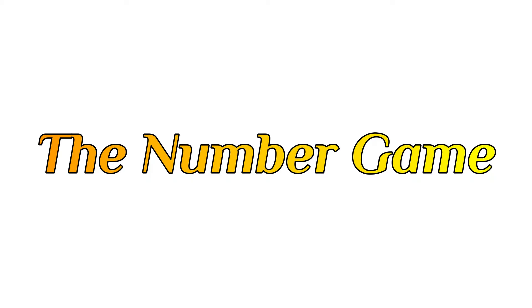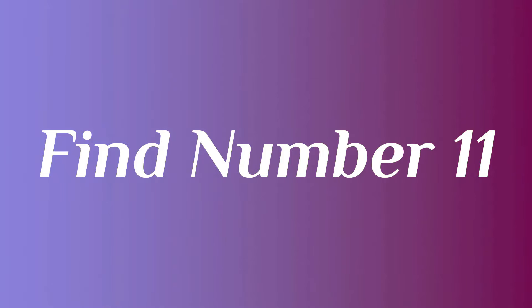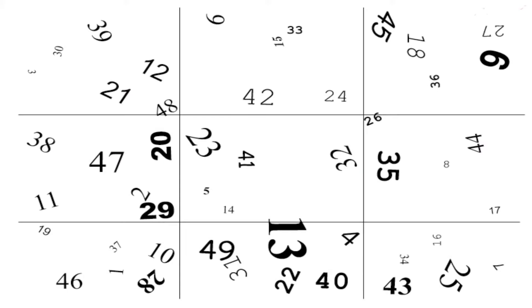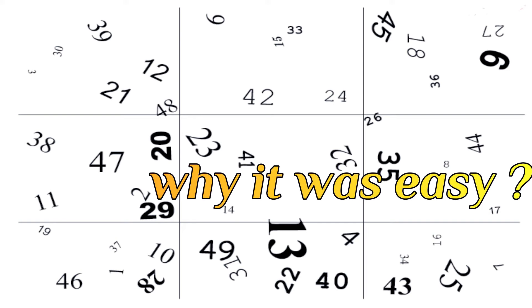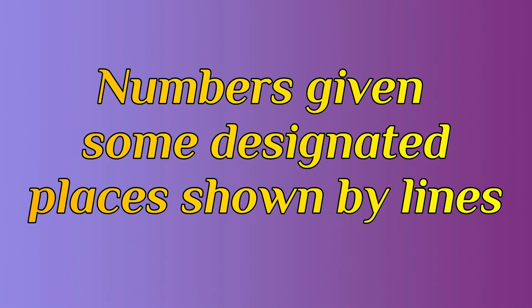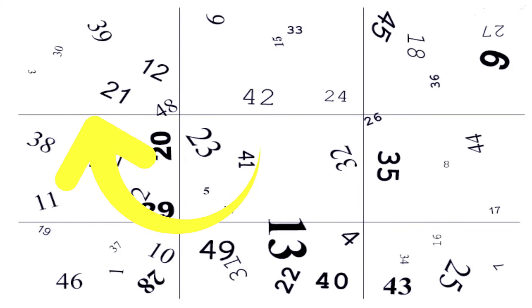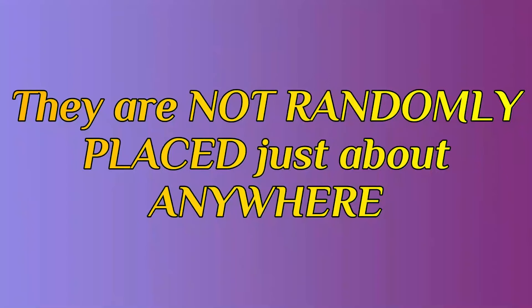Back to our number game. We implement one more S and see whether it is easier and faster to find what we are supposed to find. Find number 11. It's easy this time — much more easy! Why was it easy? Because the numbers were given designated places shown by the lines, so it became easy to look. The numbers were not randomly placed just about anywhere.